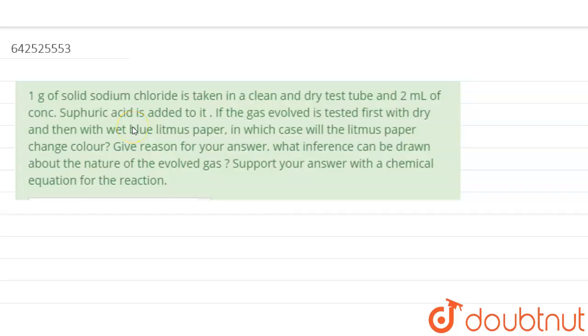If the gas evolved is tested first with dry litmus paper, blue litmus paper, and then with wet blue litmus paper, in which case will the litmus paper change color?